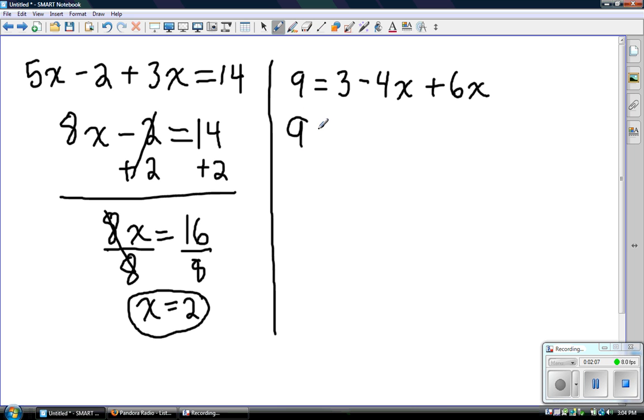So we're going to get 9 equals, I'm going to leave the 3 here, and then we have negative 4x and positive 6x. Since one's negative and the other one's positive,